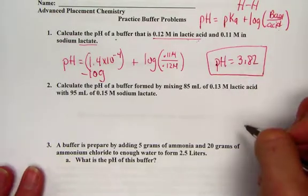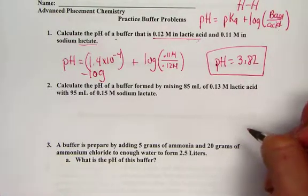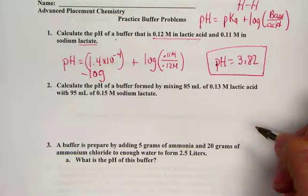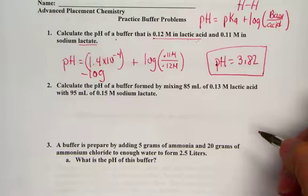Number two, let's calculate the pH of a buffer formed by mixing 85 mL of 0.13 molar lactic acid with 95 mL of 0.15 molar sodium lactate.